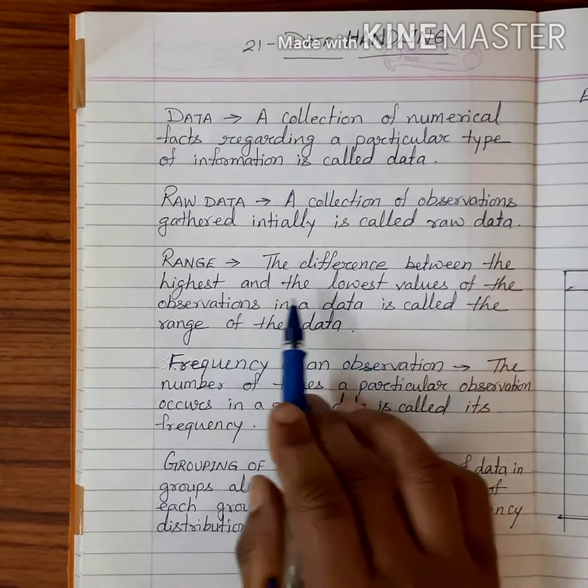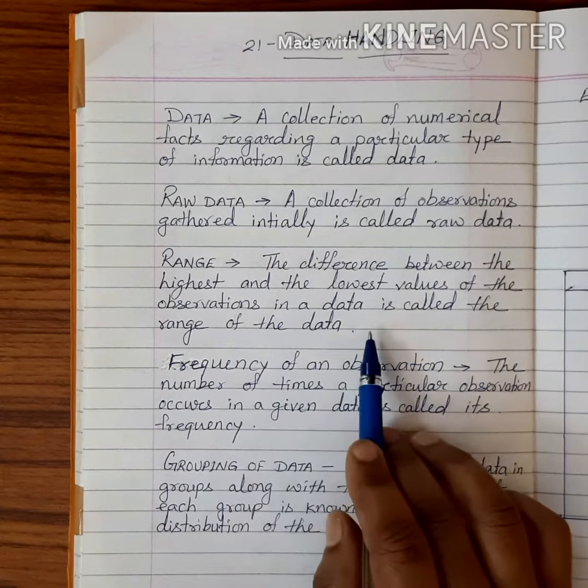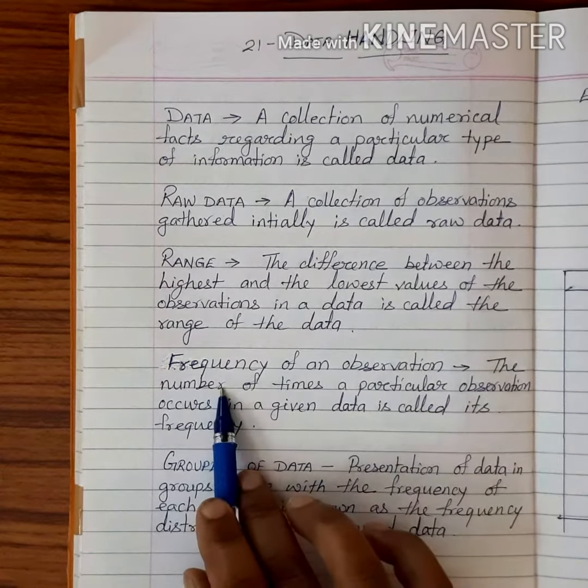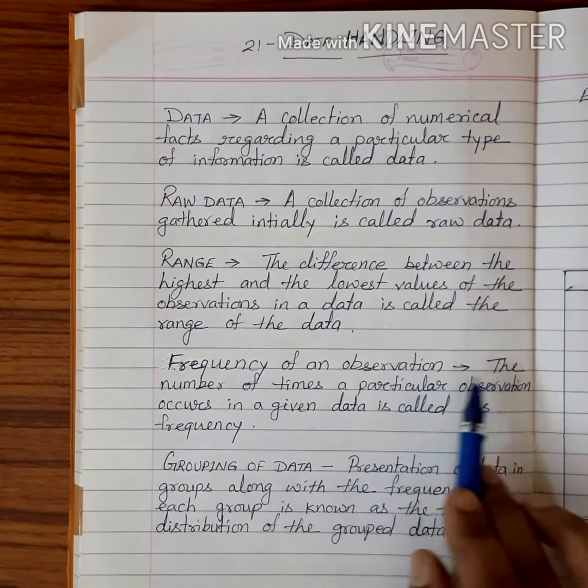gathered initially is called raw data. Range: the difference between the highest and the lowest value of the observations in a data is called the range of the data.